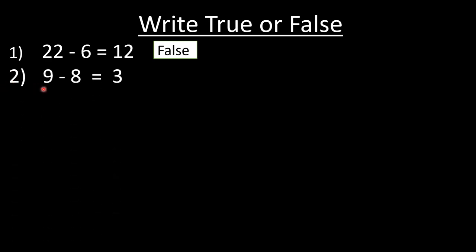Question number 2: 9 minus 8 is equal to 3. 9 minus 8 should be 1, but here it is given 3, so this statement is also false.